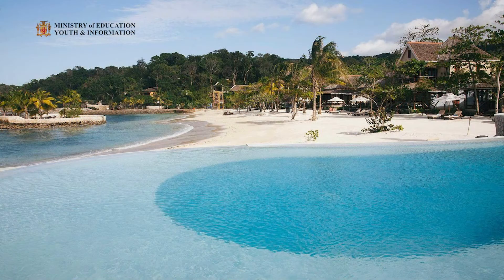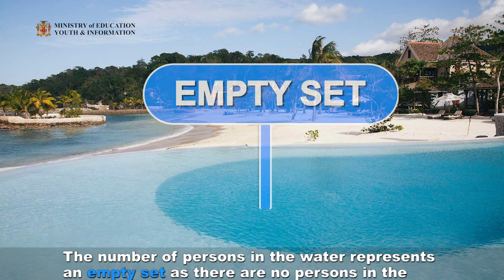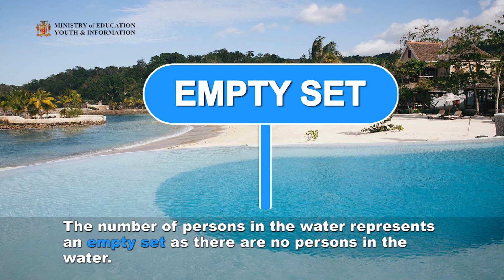Now let's look carefully at this final picture and tell me your observation. Wow, you have been doing great so far! The empty or null set could represent the persons in the water. Based on the picture, there are no persons in the water, therefore it is empty.